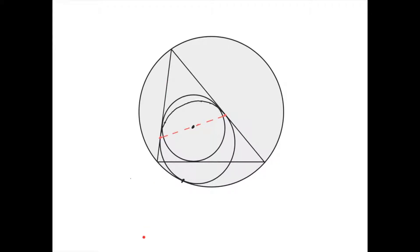The mixtilinear excircles are also tangent to this line and this line, but they are tangent to the circumcircle externally, so it may look something like that.